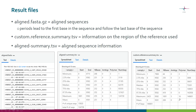Another thing you might be interested in is what is the maximum homopolymer length in the reference, because later on you will screen the alignment and you will want to get rid of sequences which have longer homopolymer lengths than this value.